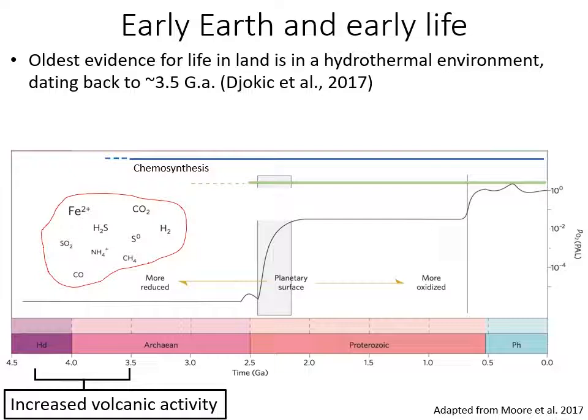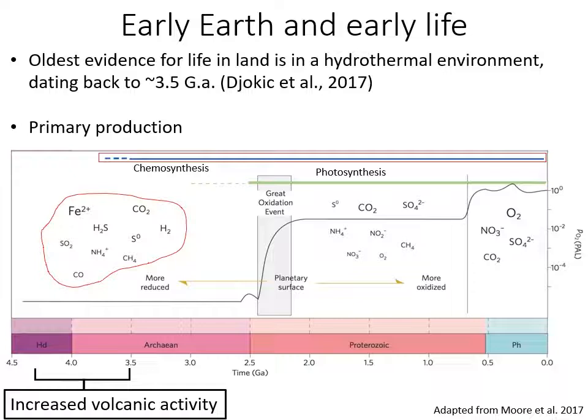On early earth, life was very likely based on chemosynthesis, and that's also true for primary production since that was the likely pathway happening. We know that since the beginning of earth history life was chemosynthetic, and of course that changed when life figured out how to use sunlight to do photosynthesis, which changed our surface and atmosphere a lot. However, what I really want to point out here is that chemosynthesis was happening since the beginning and is still happening until this day.